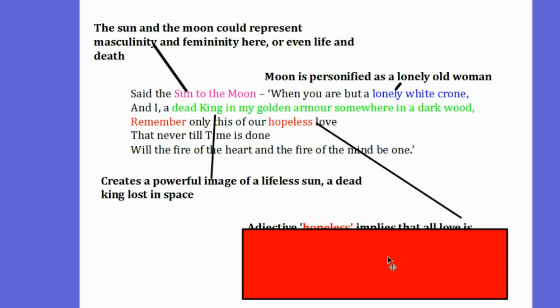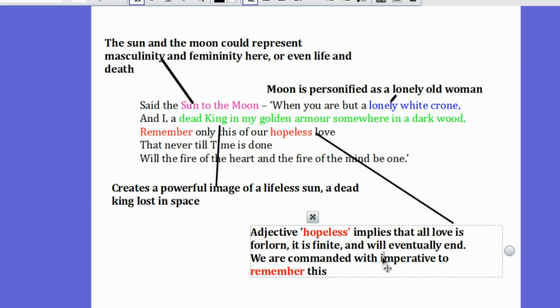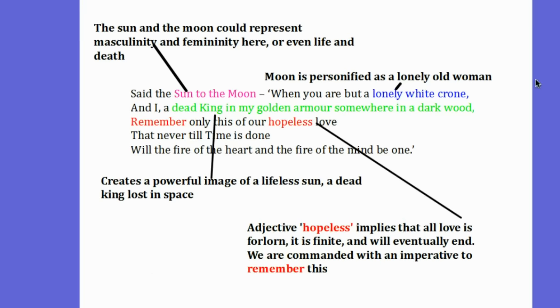And finally, the word hopeless is interesting. It's an adjective which implies that all love is forlorn. It is finite, and will eventually end. We are commanded with imperatives to remember this. And that is how the poem ends.